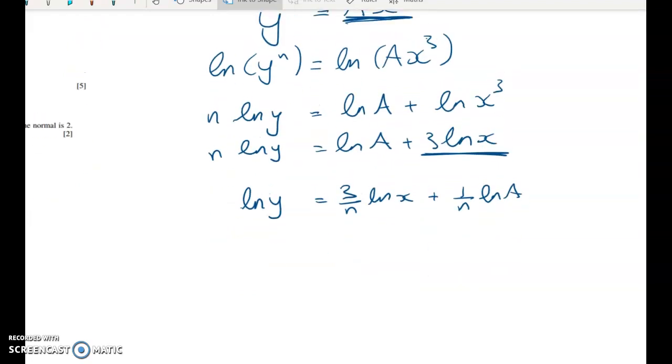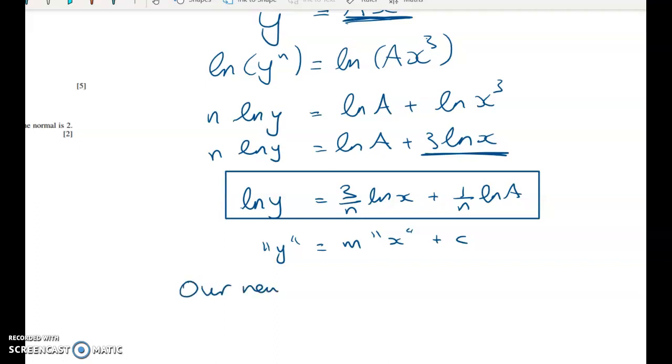And now we can say pretty straightforwardly that this is like y and this is like m times x plus c. But I don't think that, I'm not sure that that would be enough. So we're going to just say instead that when we've got this equation, so our new equation is linear in the variables log x and log of y, since n and a are constants, something like that. Okay, so that's the first two marks done.